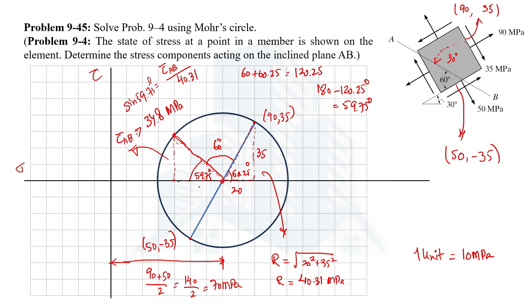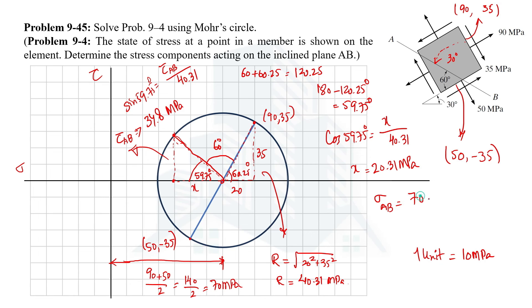For the normal stress at AB, we find the base x of this right-angle triangle: cos(59.75°) = x / 40.31, giving x = 20.31 MPa. Since the center is at 70 MPa and we are moving backward from the center, the normal stress at AB = 70 − 20.31 = 49.69 MPa.